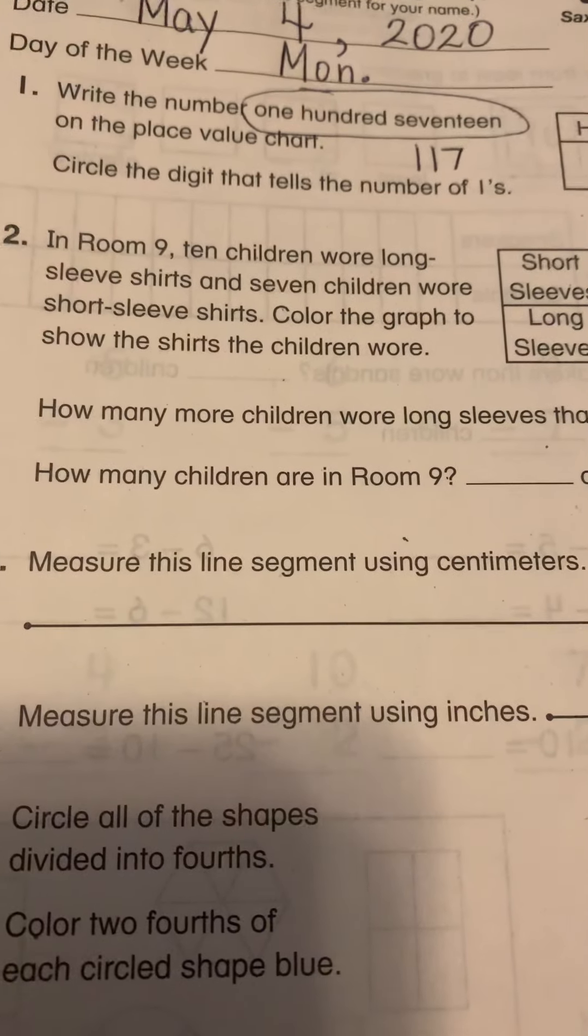Number five, circle all the shapes divided into fourths. Fourths is four equal pieces. Is this divided into four equal pieces? Yes. Is this divided into four equal pieces? No. Is this divided into four equal pieces? No. That's one-sixth. Is this divided into four equal pieces? Yes. Looks like a railroad crossing. Is this divided into four equal pieces? No.